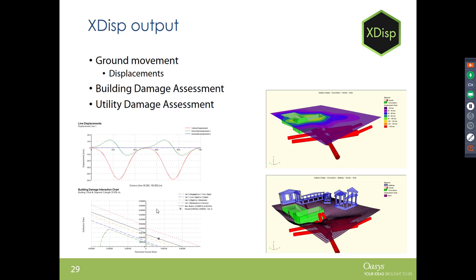In terms of outputs, XDISP provides 3D graphics output, plan view, line graphs showing different types of settlement and displacement, and building damage interaction charts. Building damage assessment will be covered in more detail at the end of the month in the second session.